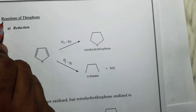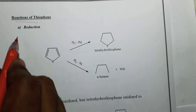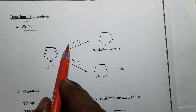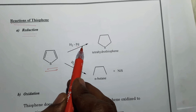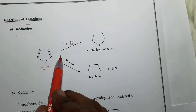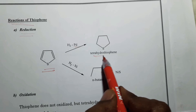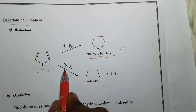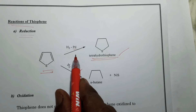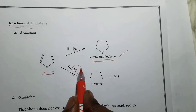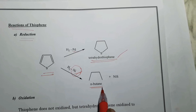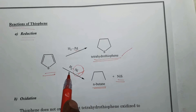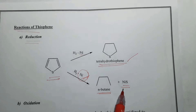Coming to the reactions of thiophene — first, reduction reactions. Thiophene on reduction with hydrogen in presence of palladium catalyst: both double bonds are reduced and it gives tetrahydrothiophene. If the palladium catalyst is replaced with nickel, the ring breaks down and produces n-butane and nickel sulfide.